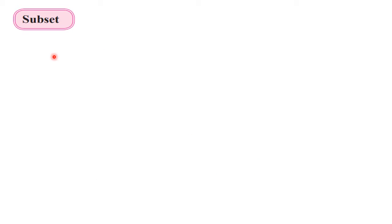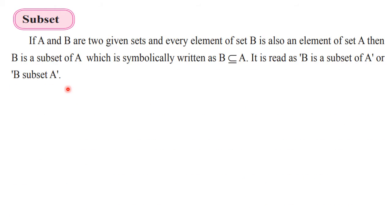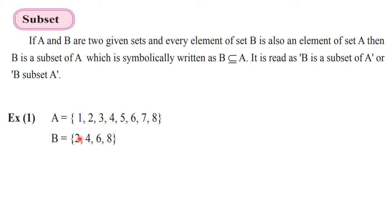Now we will see the important concept of subset. Suppose A is one set with elements 1, 2, 3, 4, 5, 6, 7 and 8, and B is a set with elements 2, 4, 6, 8 — these are natural numbers up to 8 and even natural numbers respectively. What we can find here is all the elements of B are present in A. If every element of set B is also an element of set A, then we say that B is a subset of A.